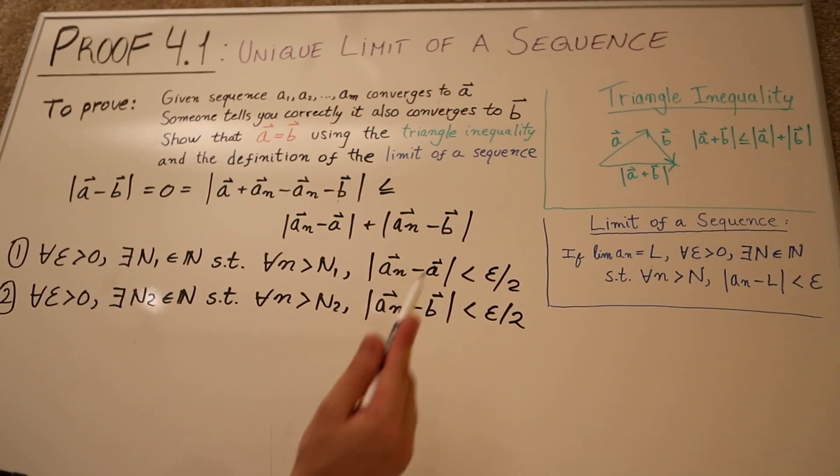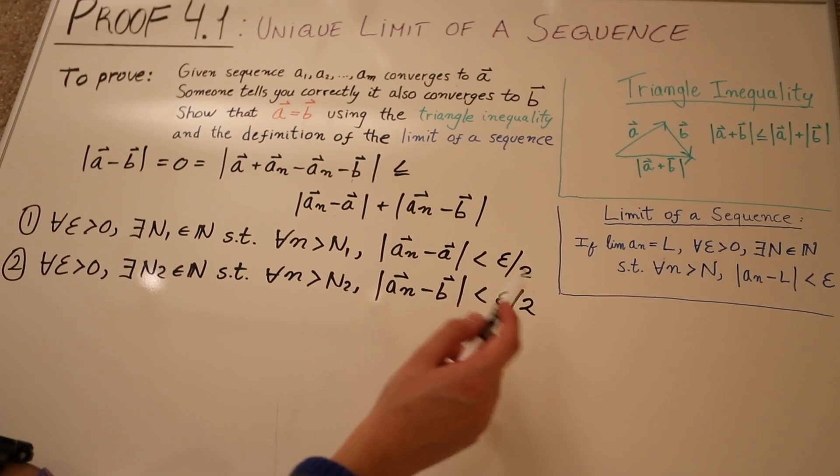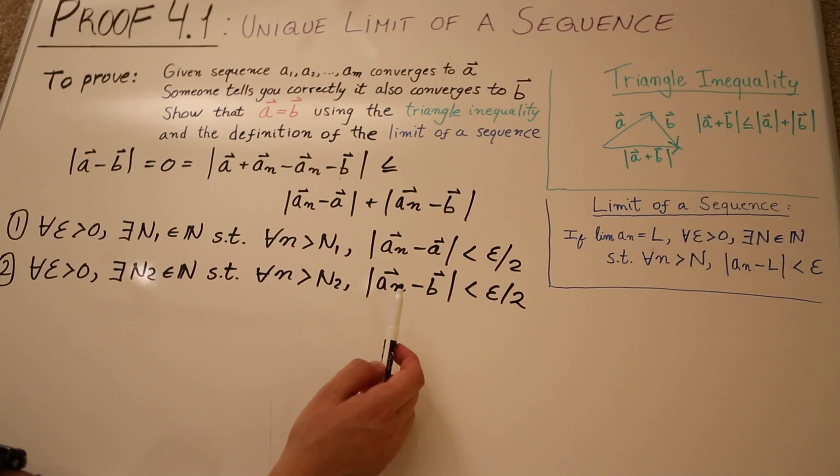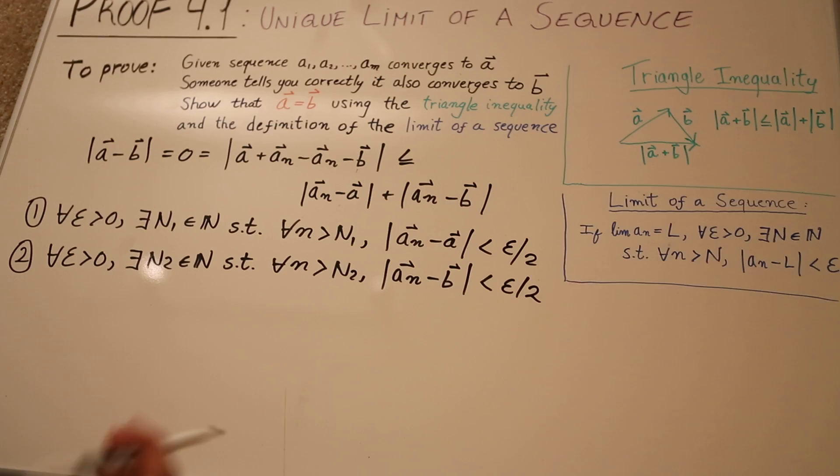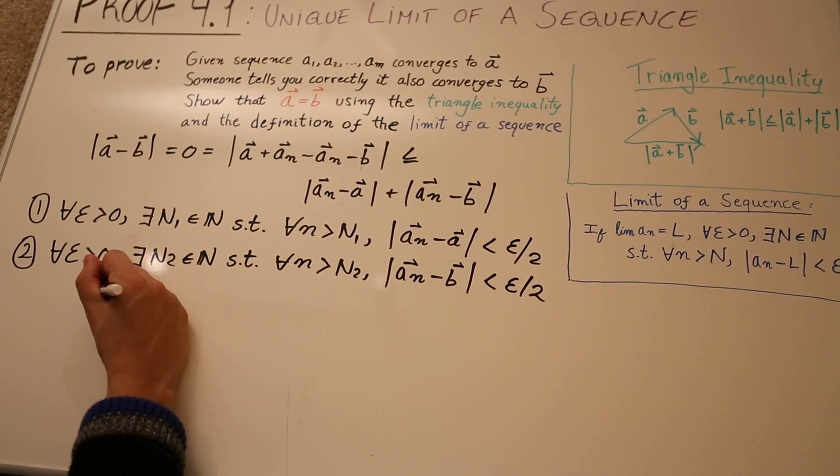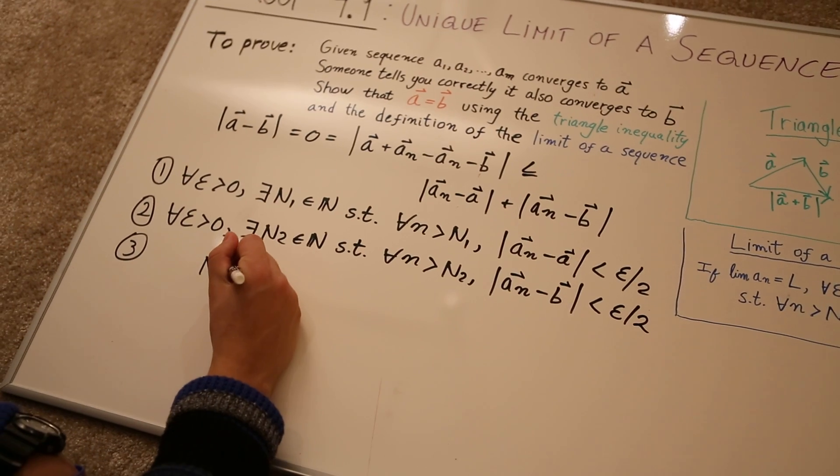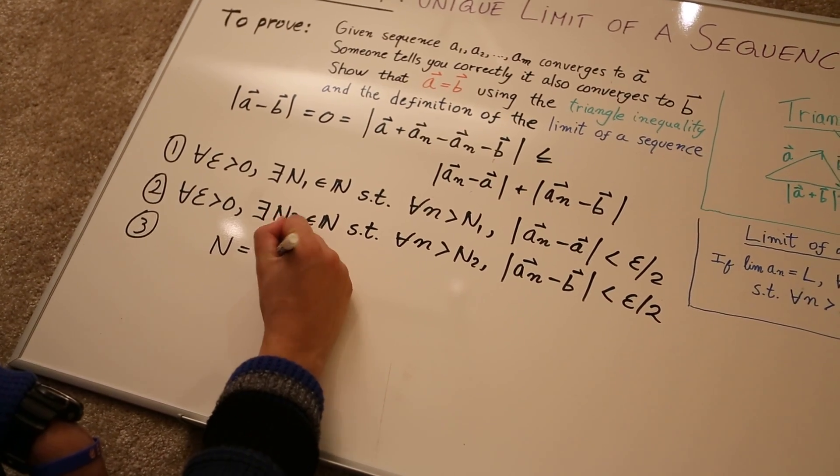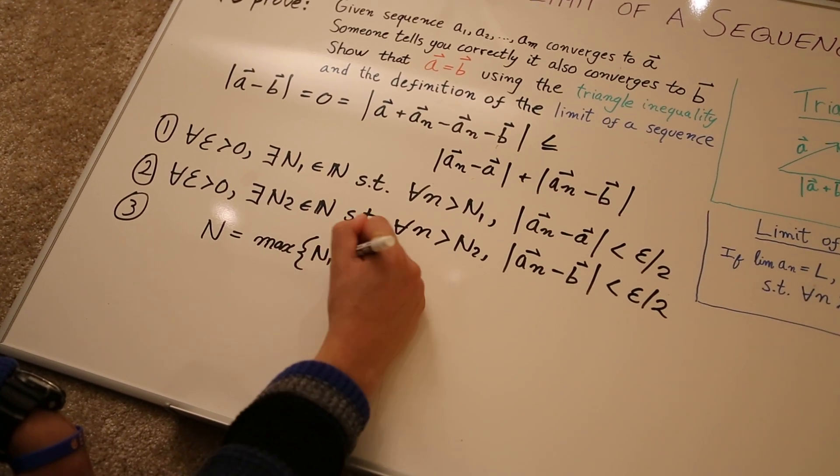And now, as you can see, if we apply these two to here, we can just add them, and it's going to give us just epsilon, right? Now, we can't do that quite yet, because this is only true if these two are true at the same time. And the way we can combine them is by setting a third index, let's call it N, just N. And let's say that N is the max of N1 and N2.